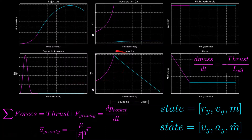For the velocity plot, we see that velocity is also increasing non-linearly. And then once the thrust cuts off, the velocity is changing with a constant acceleration, which is just the acceleration due to Earth's gravity.